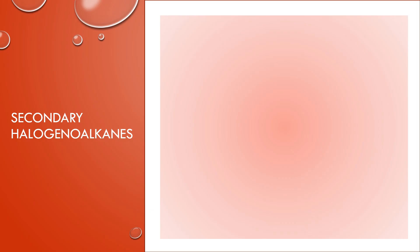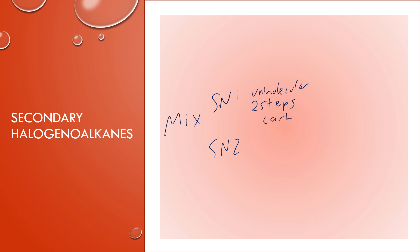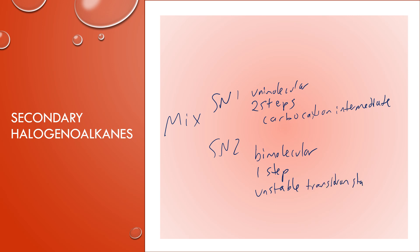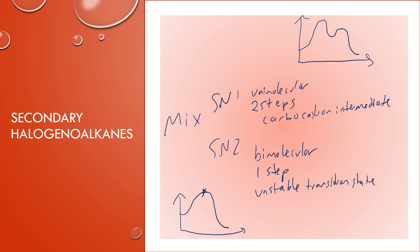Secondary haloalkanes are going to do a mix of SN1 and SN2. Remember, SN1 is unimolecular — it happens in two steps with a carbocation intermediate. SN2 is bimolecular — it happens in just one step, but it has an unstable transition state. If we were to draw the reaction profile diagrams, SN1 would have two humps with a carbocation intermediate, whereas SN2 would have a single hump representing that unstable transition state.